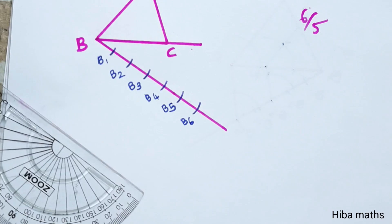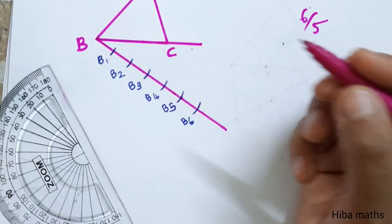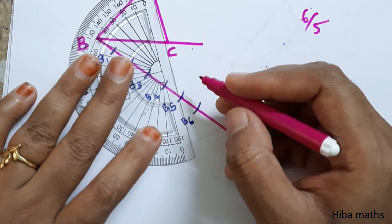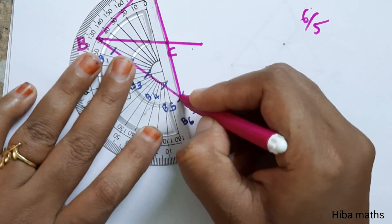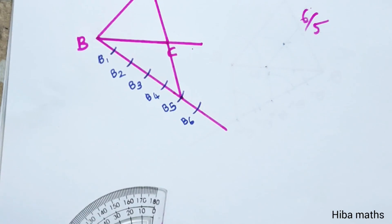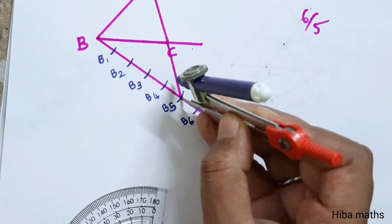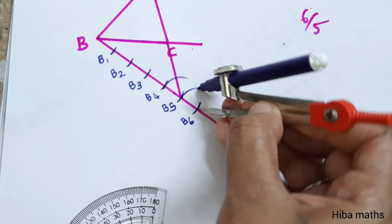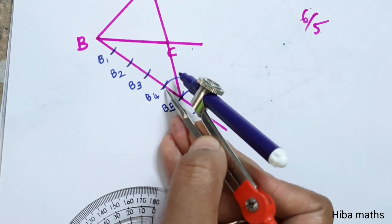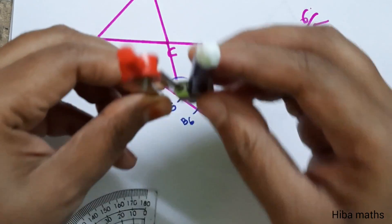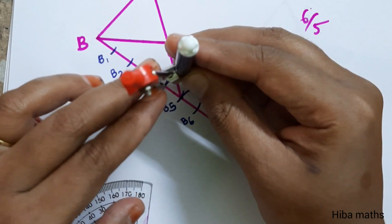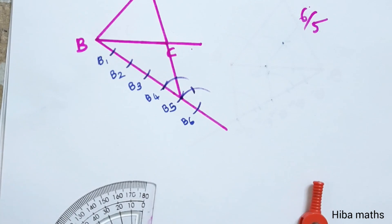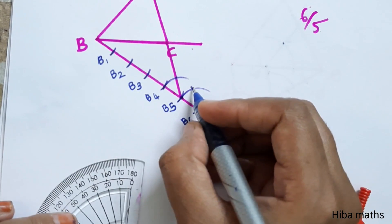Now we join at B5. We make an angle and cut at B6. We take the required measurements and connect with a point. We make a point and connect it with B5.